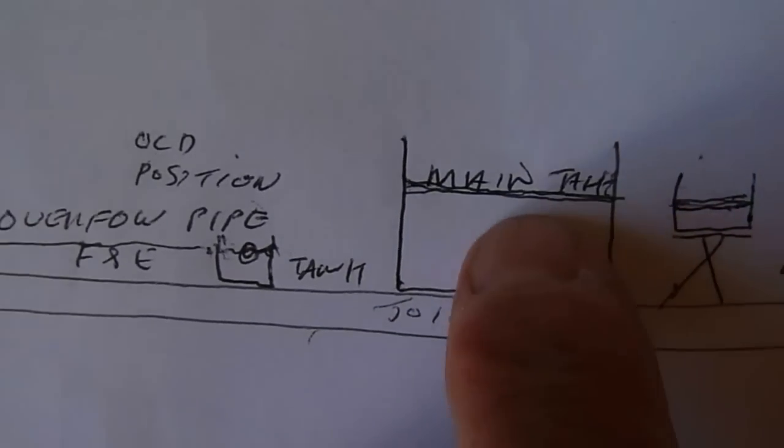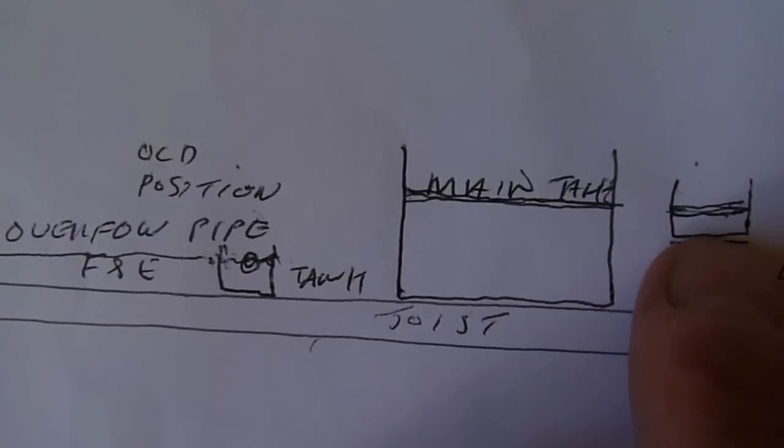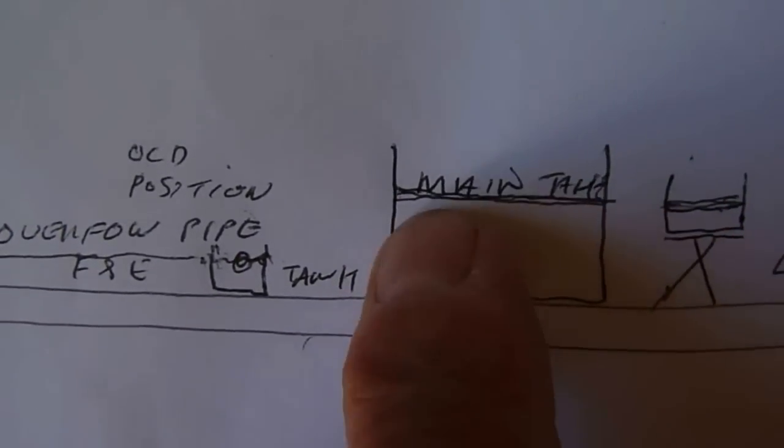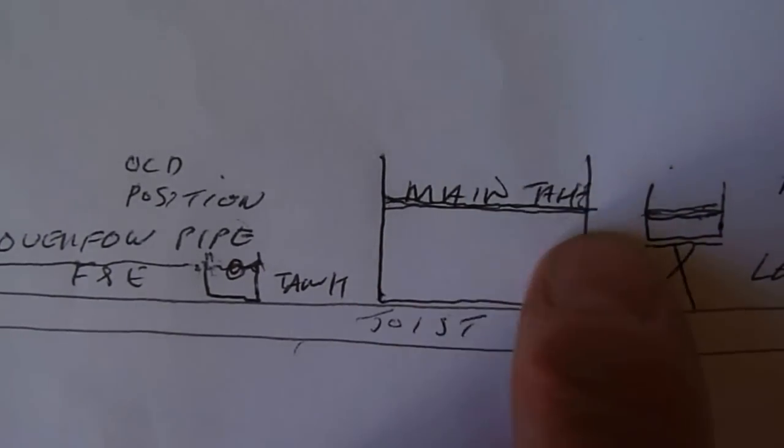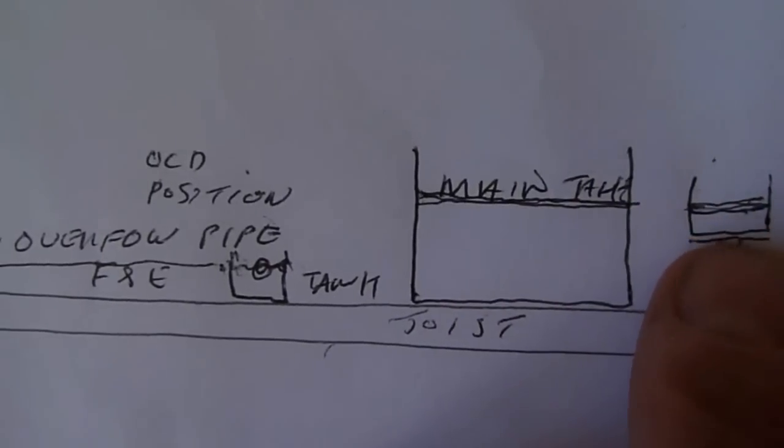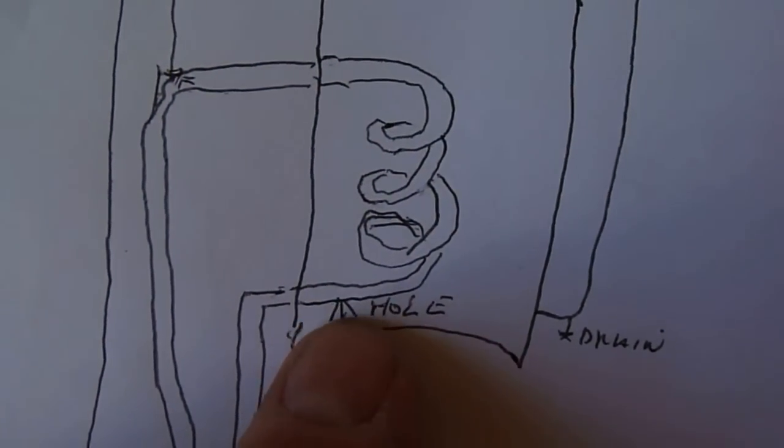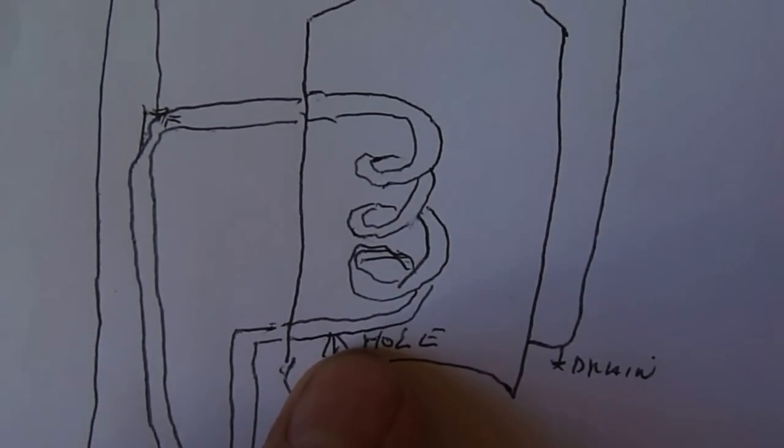So the water level is the same as your main tank. This equalizes the pressure. Now because they're both at the same water level, when that pressure goes down to this tiny hole, water probably won't go in and it won't come out either.